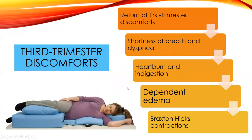Third trimester discomforts include return of many first trimester symptoms as the baby moves down into the pelvis. Shortness of breath, difficulty breathing, increased heartburn, and dependent edema are common — pregnant women will third-space their extra fluid. We want to know what's normal to catch what's not. Extreme edema of lower or upper extremities or around the face could signal a preeclamptic state. She will also have more Braxton Hicks practice contractions.